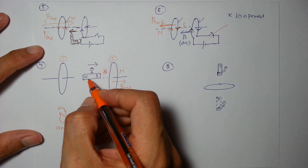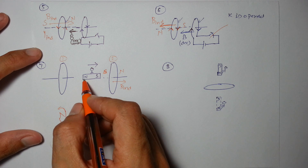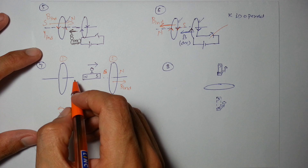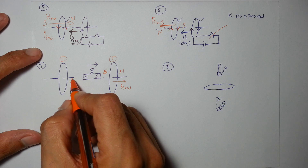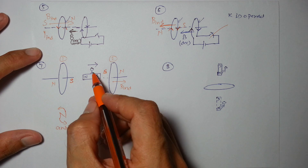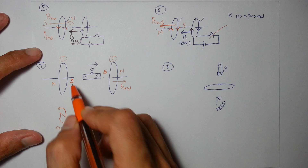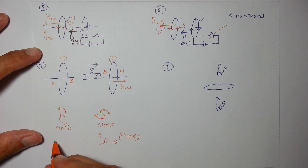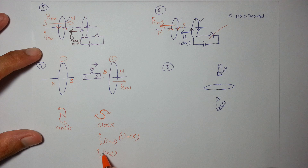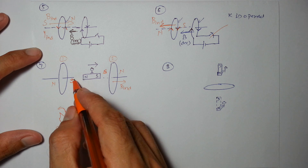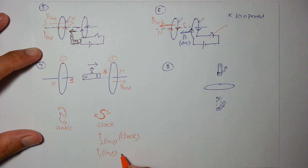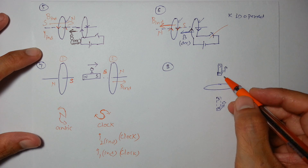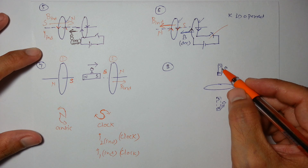As the north pole is moving away from loop 1, to oppose this motion the coil will create a south pole on this side and north on the other side. The observer's nearer pole is again south, so even in loop 1 the induced current i1 will be clockwise as observed.